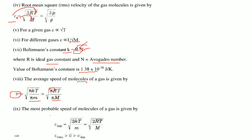The most probable speed of molecules is given by V_mp = √(2kT/M) or √(2RT/M). So the average speed lies in between the RMS speed and the most probable velocity.